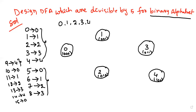The first value is 0. In binary, 0 is just 0. Since 0 is divisible by 5, it is accepted — so this is the final state. Remember, this is a final/accepted state.